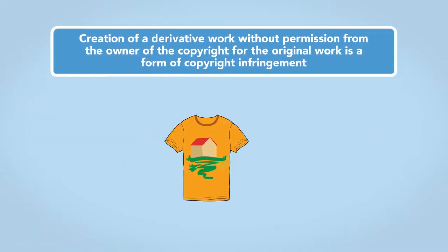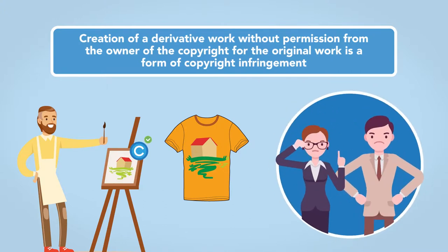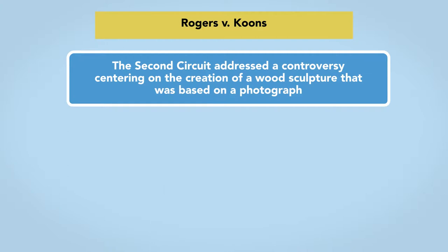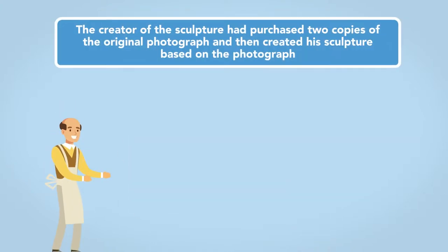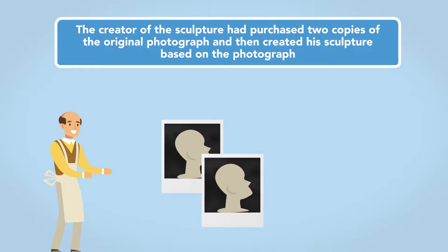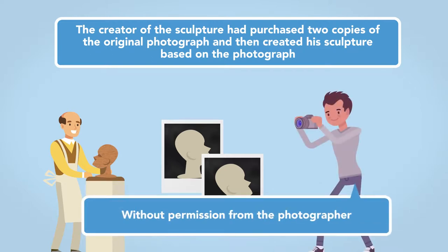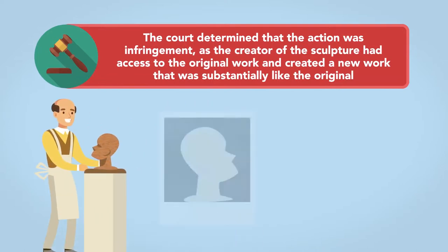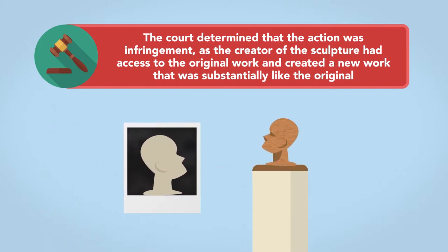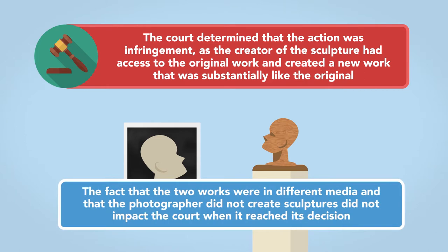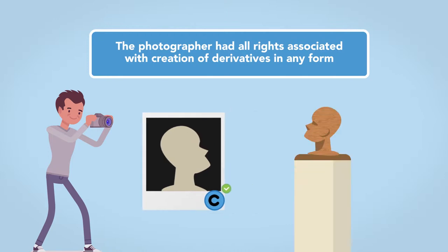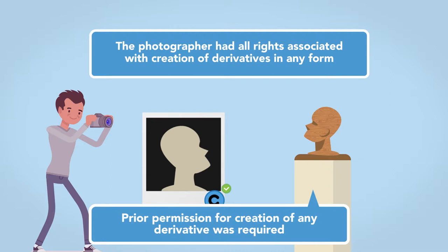Creation of a derivative work without permission from the owner of the copyright for the original work is a form of copyright infringement. In Rogers v. Coons, the Second Circuit addressed a controversy centering on the creation of a wood sculpture that was based on a photograph. The creator of the sculpture had purchased two copies of the original photograph and then created his sculpture based on the photograph without permission from the photographer. The court determined that the action was infringement, as the creator of the sculpture had access to the original work and created a new work that was substantially like the original. The fact that the two works were in different media did not impact the court when it reached its decision. As the owner of the copyright, the photographer had all rights associated with creation of derivatives in any form. Thus, prior permission for creation of any derivative was required.